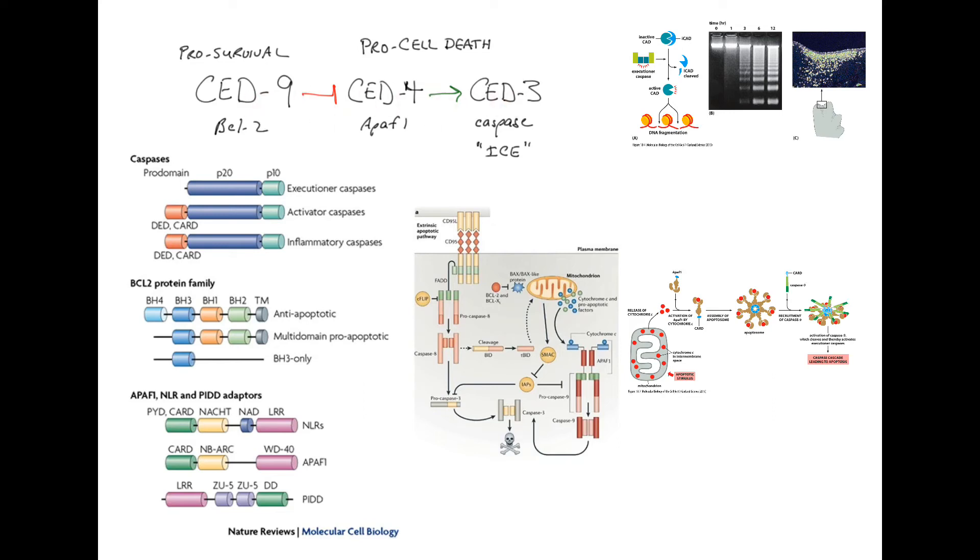The reason that this became very important to people other than those studying worms was some sequence similarities between the gene products of these genes and mammalian, i.e. human, genes and their gene products. CED-3 was established to encode an enzyme that's referred to as a caspase, a cysteine aspartate protease, that in humans at that time was called ICE, interleukin converting enzyme. So that was a protease that was of interest only to a few people that studied interleukin processing.